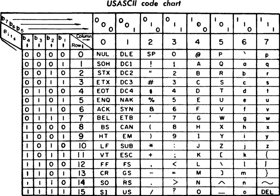ASCII was first used commercially during 1963 as a 7-bit teleprinter code for American Telephone and Telegraph's TWX network. TWX originally used the earlier 5-bit ITA2, which was also used by the competing Telex teleprinter system. Bob Bemer introduced features such as the escape sequence. His British colleague Hugh McGregor Ross helped to popularize this work — so much so that the code that was to become ASCII was first called the Bemer-Ross code in Europe. Because of his extensive work on ASCII, Bemer has been called 'the father of ASCII'.